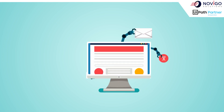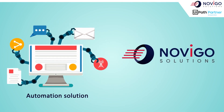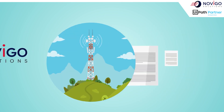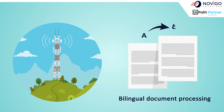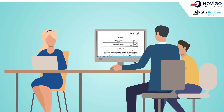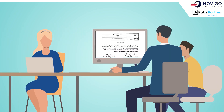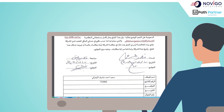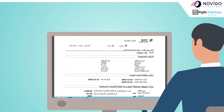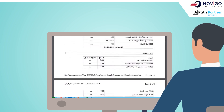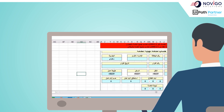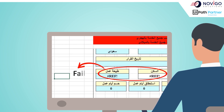Here is an example of an automation solution implemented by Novigo for one of the world's largest telecom service providers to assist them in bilingual document processing. The client's AP payroll department was reviewing hundreds of documents in a day for accuracy prior to authorizing bank payments. These documents were not standardized templates and contained information both in Arabic and English. Traditional OCR tools would fail at meaningful information extraction.